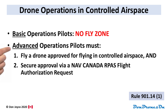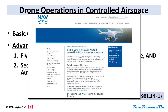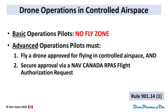For advanced operations pilots, there are two requirements. First, you need to be flying a drone approved for flying in controlled airspace — there's a list on the Transport Canada drone safety web page. And you need to have an approved NAV Canada RPAS flight authorization request. These approvals are done on a per-mission basis, must be done in advance, and require you to provide lots of details of your mission and your safety procedures. The approval form is available on the NAV Canada web page, and the Drone Pilot Canada app sets these forms up for you in seconds.